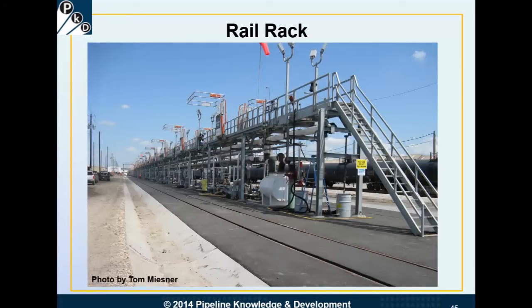Moving on to rail. Here's a rail rack — you can see the railroad coming in, a very clean facility. If you look at the stairs going up to the platform, workers have to get on top of these cars to open the dome lid. There are little hand railings built there, and under each railing down the rail rack a car will be spotted or stopped. This is an unloading facility, though it can also be used for loading. When the cars are spotted, a gangway is lowered down onto the tank so people can get on and work.